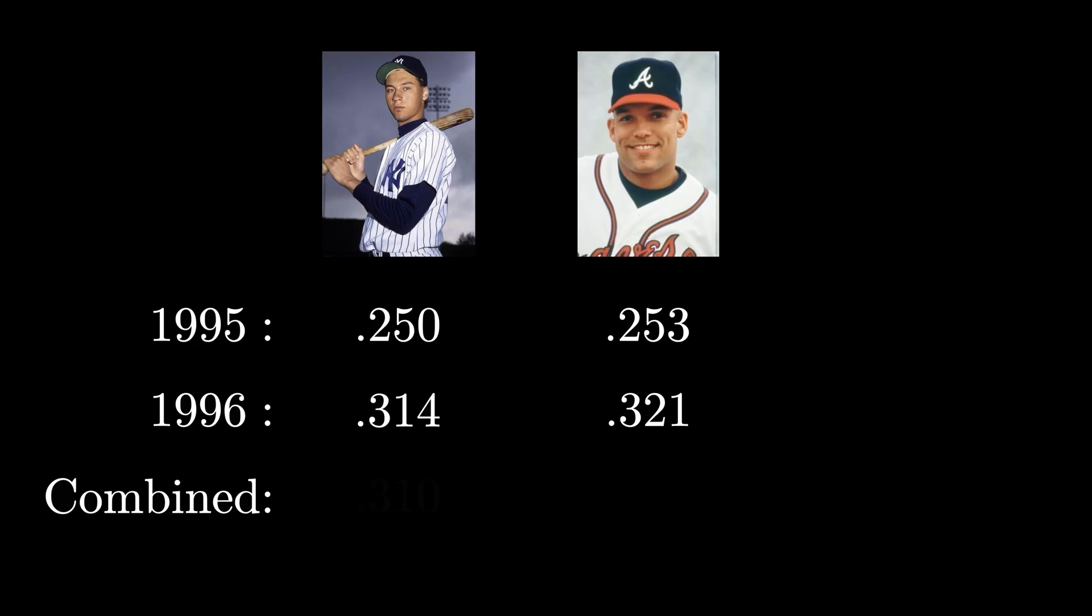When we do that, we get that Jeter hit a combined average of .310, while Justice's combined average was only .270. Somewhat surprisingly, Justice was the better hitter, by average, in both 1995 and 1996 separately, but over the two-year span, Jeter was the better hitter, by average. How can this be?